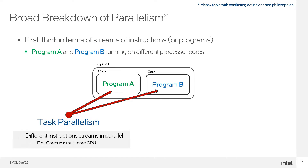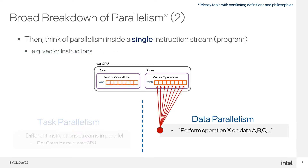First, let's think about two programs, or different streams of instructions. Those programs can each run on different pieces of the hardware, such as different cores of a CPU. We'll call this task parallelism, where different programs are running — or said another way, where different streams of instructions are running in parallel. Now let's look at what happens within one of the programs, perhaps running on one of the CPU cores, and specifically we want to look at data parallelism, where an instruction such as an add might run on multiple elements of data in parallel. An example is vector hardware units, where the add may be performed on 8 or 16 different scalar pieces of data in the same clock cycles. We'll call this data parallelism because different data is being processed by the same instruction in hardware, in parallel.